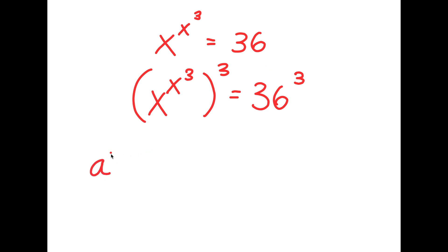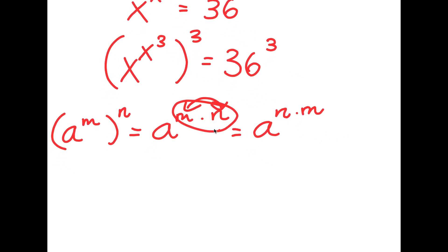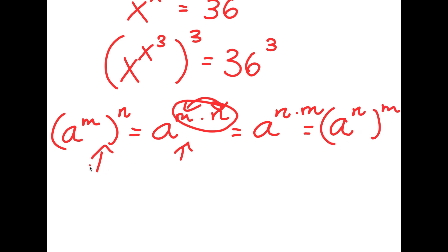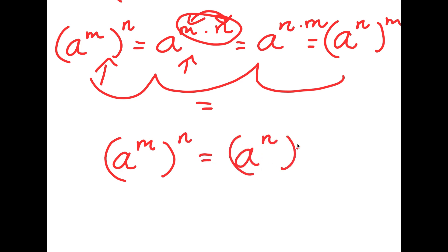Now, if I have something in the form a to the power of m to the power of n, this is equal to a to the power of m times n. And notice that for multiplication, I can switch the places of these two numbers. So this is the same thing as a to the power of n times m. Now, if I have something in the form a to the power of m times n, this is equal to a to the power of m to the power of n, then a to the power of n times m should equal a to the power of n to the power of n. Meaning, all four of these are equal to each other. So my point is that a to the power of m to the power of n is the same thing as a to the power of n to the power of m.